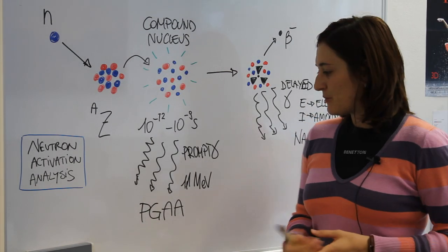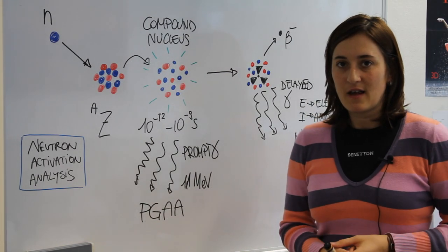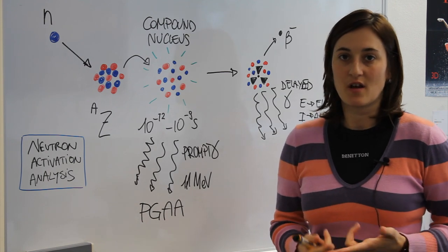Typical elements that are determined with PGAA are low-Z elements like for example hydrogen, nitrogen and boron.